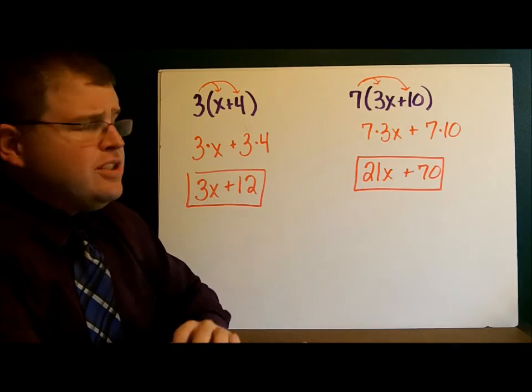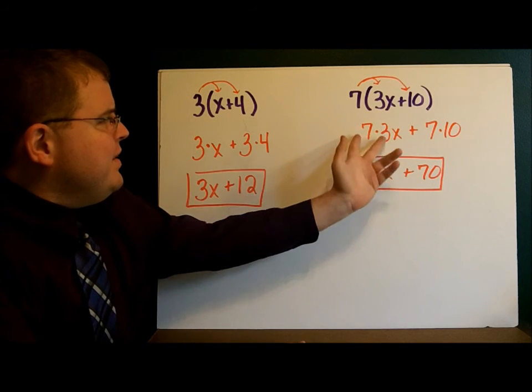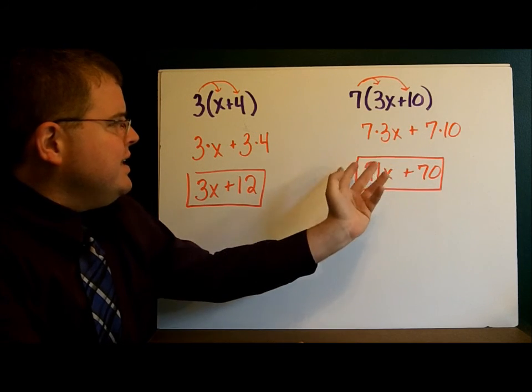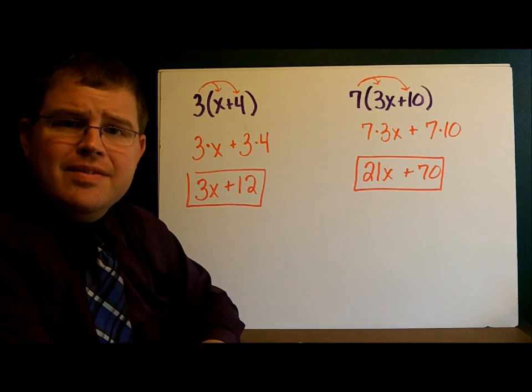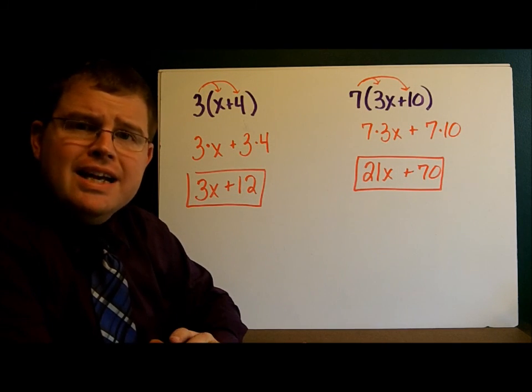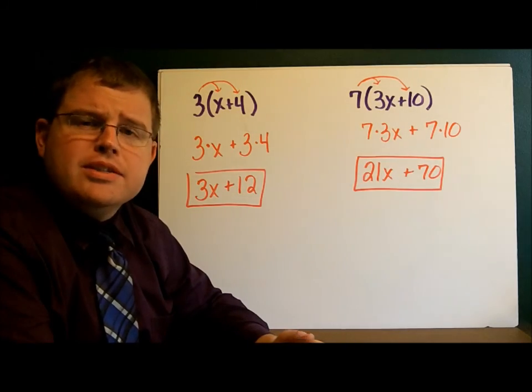Over here we're distributing a 7 into the 3X plus 10. Well, what we really have is 7 times the 3X. That gives us the 21X. And 7 times the 10, that gives us the 70. We're going to use this idea of writing these out. It's really going to help us when we're working with the square roots.